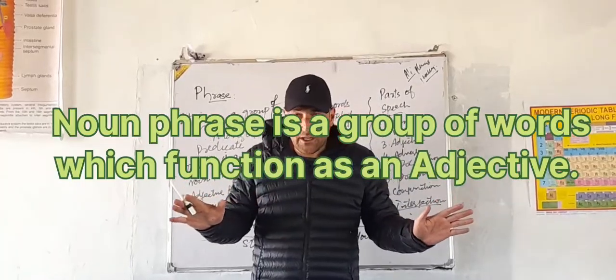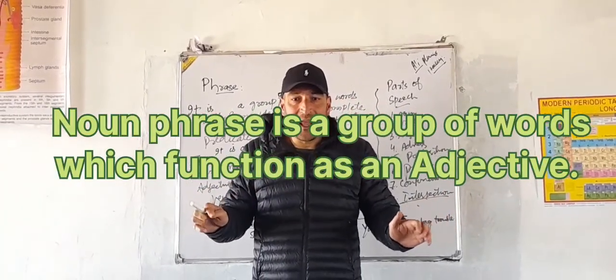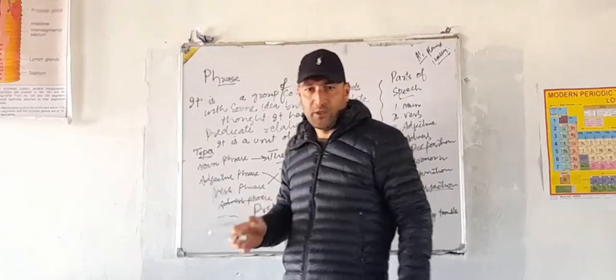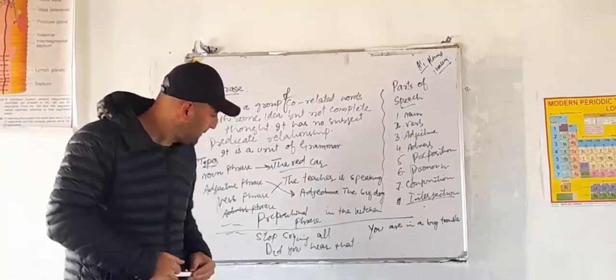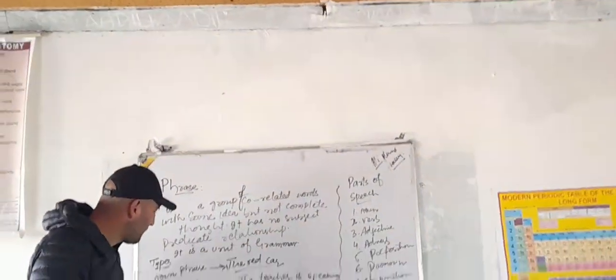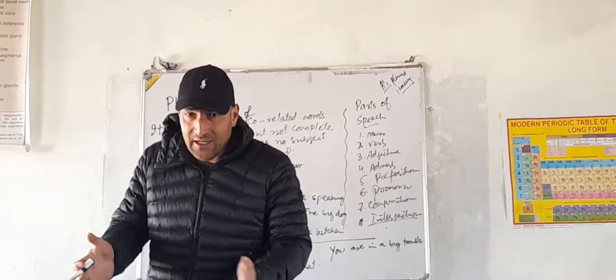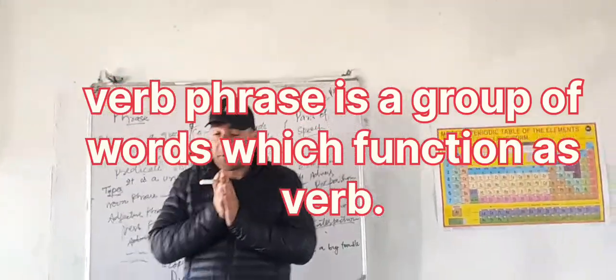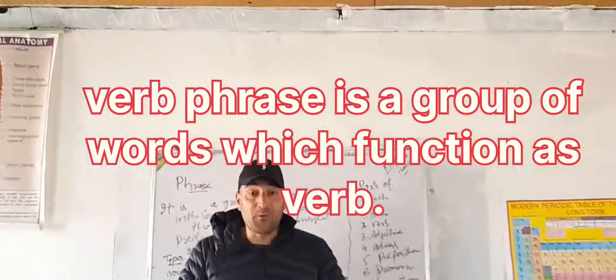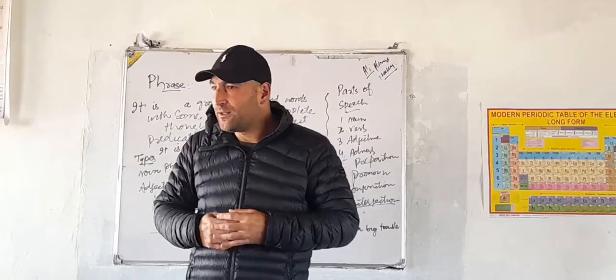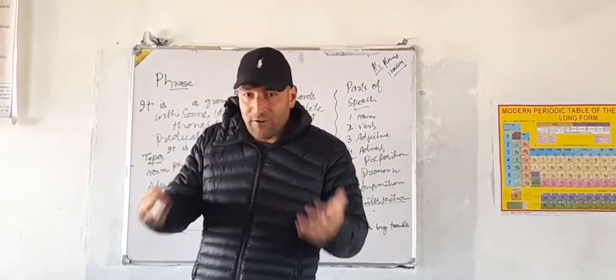Noun phrase is a group of related words which function as noun. Simple. Verb phrase is a group of related words with no subject and predicate relationship which function as verb. That is verb phrase.